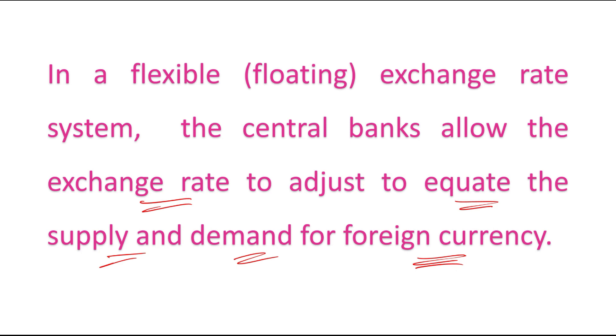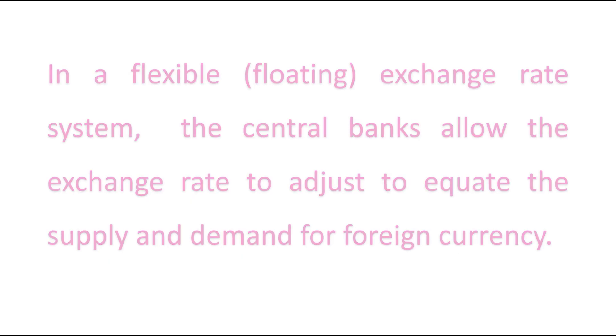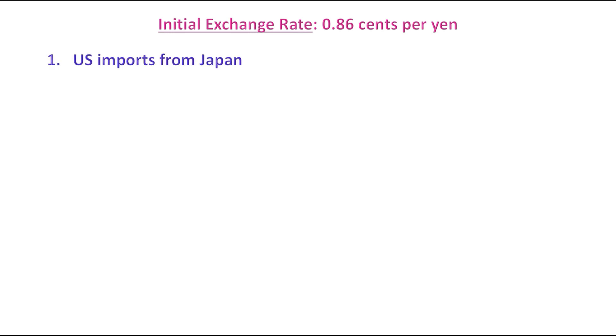Let us understand this with the help of an example. Suppose that the initial exchange rate is 0.86 cents per yen — this is the initial exchange rate we have assumed. We also assume that U.S. imports from Japan have been increased.